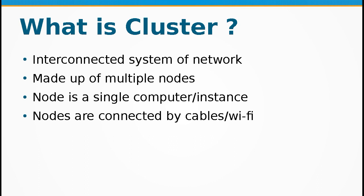A distributed system is basically a cluster which is made up of multiple nodes, and each of them are going to be interconnected by means of network equipment, which can be either Ethernet cable, fiber optic cables, or Wi-Fi.